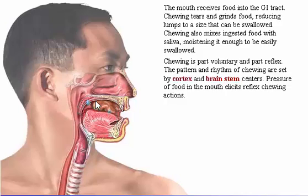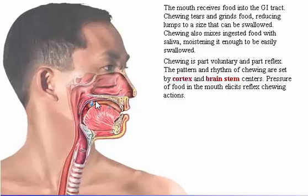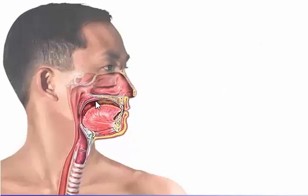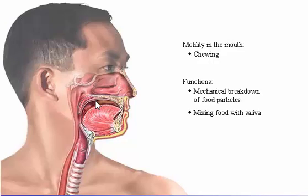Chewing is part voluntary and part reflex. The pattern and rhythm of chewing are set by the cortex and brain stem centers. Pressure of food in the mouth elicits reflex chewing actions. In summary, the type of motility in the mouth is chewing, and the function of chewing is to mechanically break down food particles and mix the food with saliva.